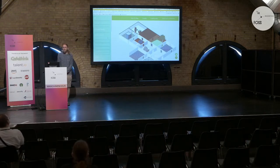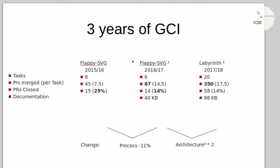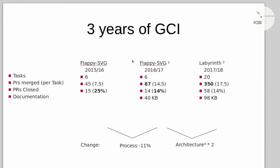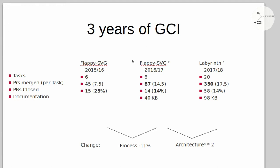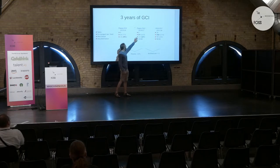Are there any statistics on how what you did contributed to students having an easier time integrating themselves? The Labyrinth is the third year of Google Code-In where I participated. In the first two years we created another game called Flappy SVG. We had about six tasks there; in the Labyrinth we have 20. What's interesting is that 25% of pull requests were closed in Flappy SVG, and we went down to 14% in the Labyrinth.